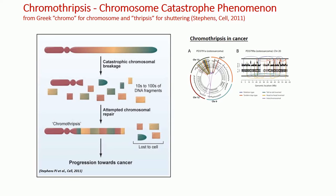Chromotripsis is a phenomenon of chromosome shattering by unknown intra- or extracellular factors, where hundreds of DNA double strand breaks are localized in relatively small genomic regions ranging from a few hundred kilobases up to several megabases in size, or in larger regions such as whole chromosome arms or even entire chromosomes. These generated double strand breaks are subsequently stitched together in a random order, resulting in complex genomic and chromosomal rearrangements.